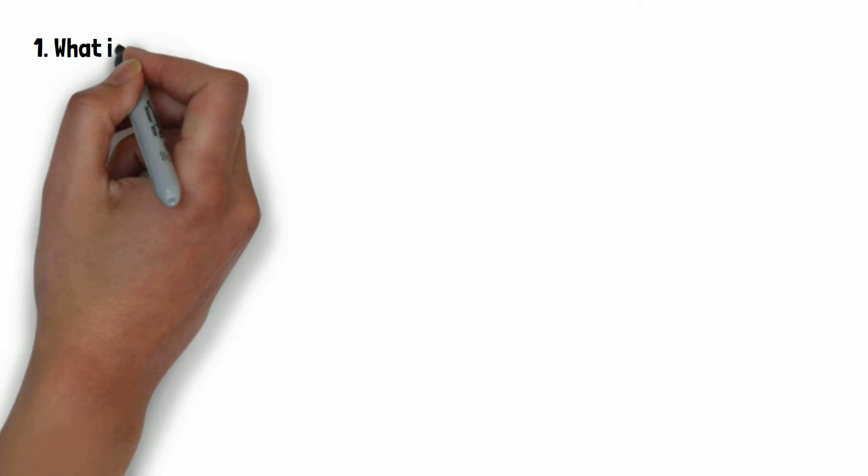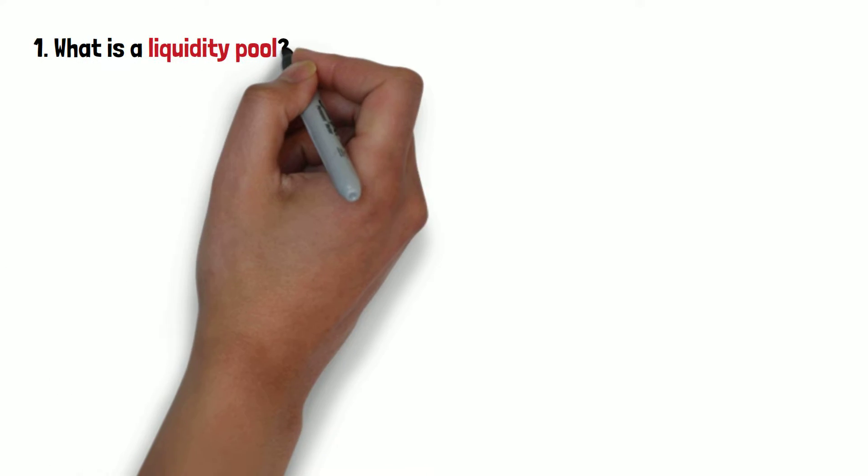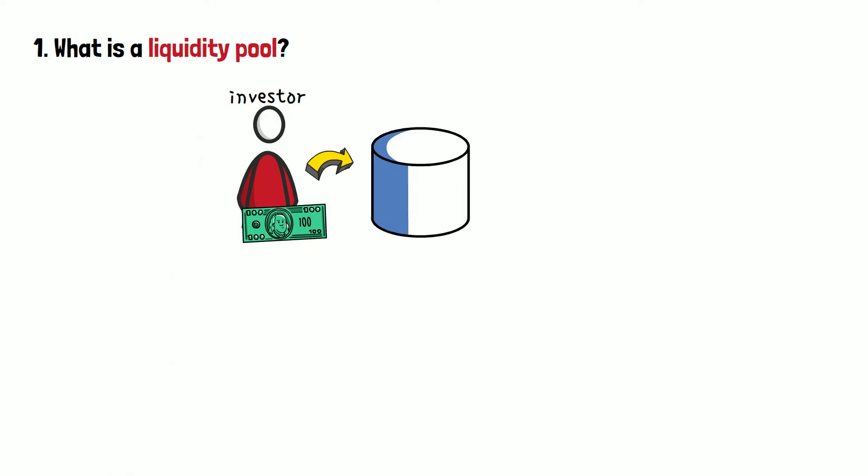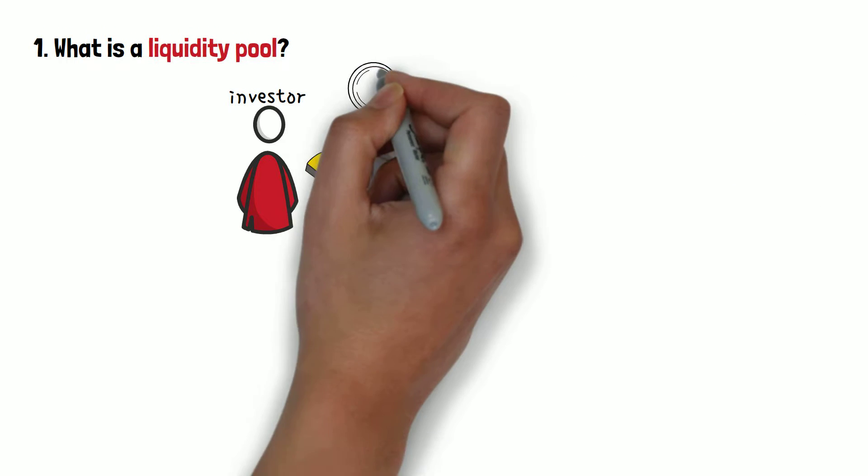Let's not waste any time and get right into it. Starting the video off, let's establish what exactly is a liquidity pool. There are two ways of how you can look at it, as an investor and as someone who will actually use the pool. First, let's discuss the investor's point of view. A liquidity pool is a place where you can lock up your money or a specific asset for a set amount of time.